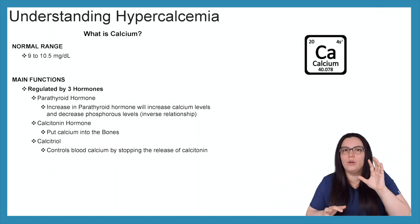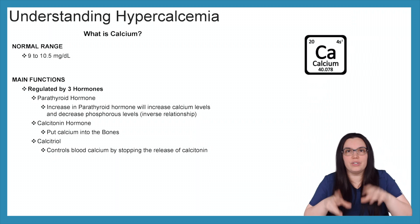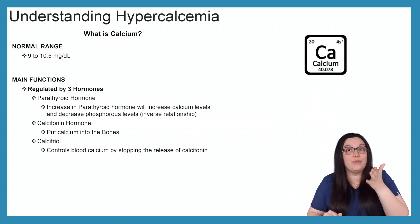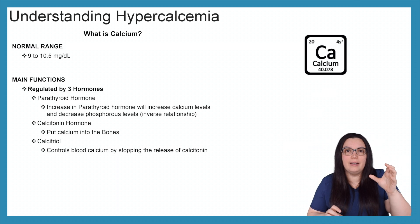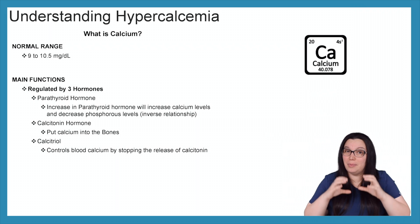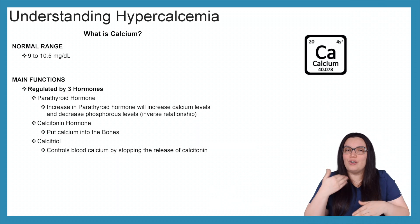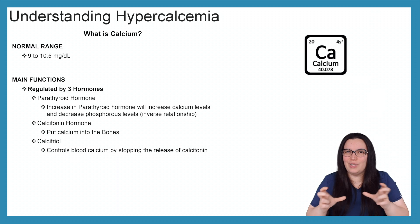When one goes up, the other goes down and vice versa. Also when it comes to our calcium, they are best friends with magnesium. So when you have a high calcium level, you're probably going to have a high magnesium level and a low phosphorus level. Make sure you check out those other videos where we go more in depth of what these relationships look like.